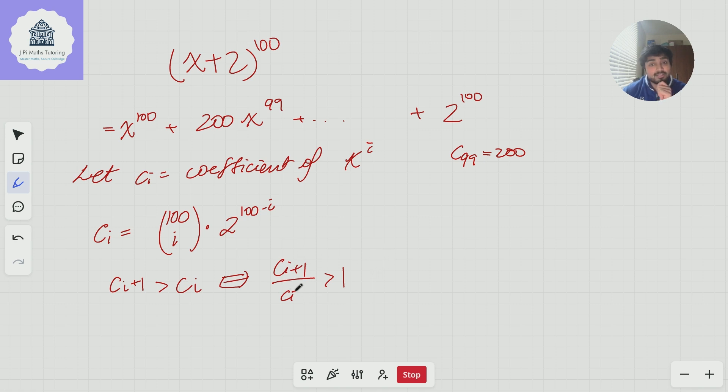And now this thing is quite nice because it's easy to take the ratio of these two numbers. Obviously, if i is 50, c_50 is a huge number. I don't really want to calculate it, but I can calculate the ratio quite nicely. So c_{i+1} would be 100 factorial over (i+1) factorial times (99-i) factorial multiplied by 2 to the (99-i). And c_i would be 100 factorial divided by i factorial times (100-i) factorial multiplied by 2 to the (100-i).